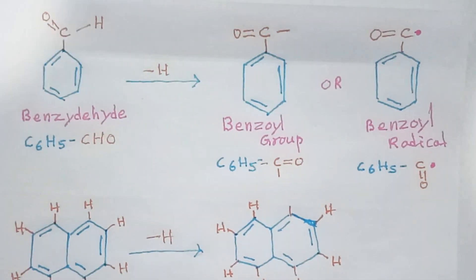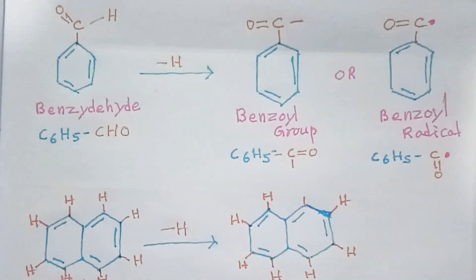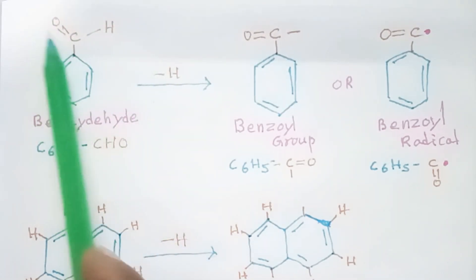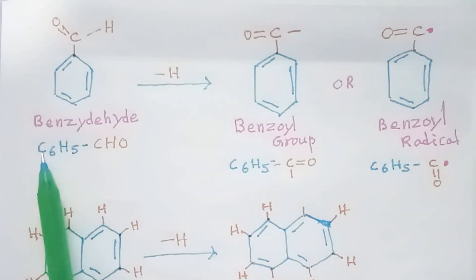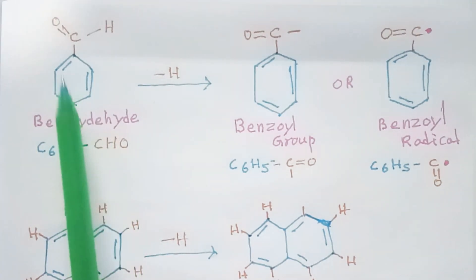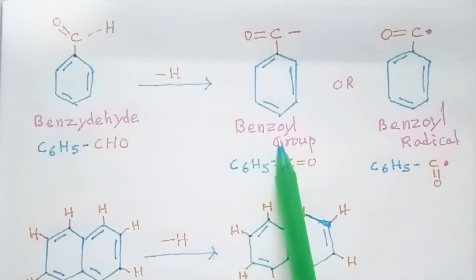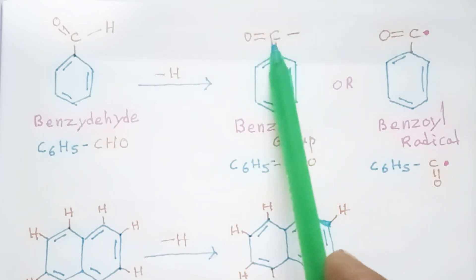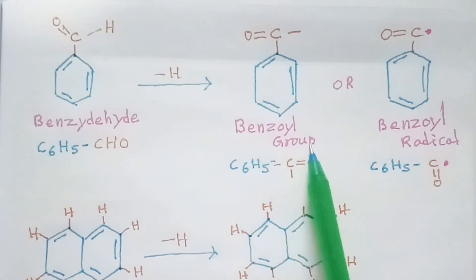This next example is C6H5–CH=O, which has an aldehyde group substituted on the benzene ring — that gives C6H5CHO. If we remove a hydrogen atom from this aldehyde group, we get C6H5–C=O with a free valence. This is the benzoyl group.